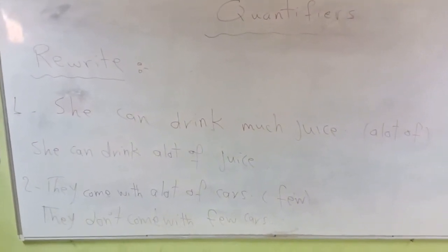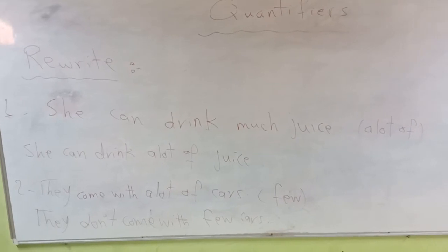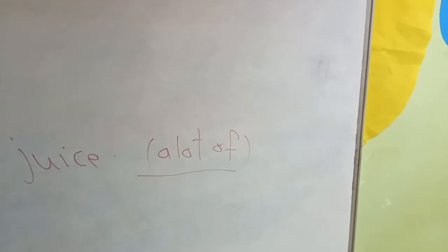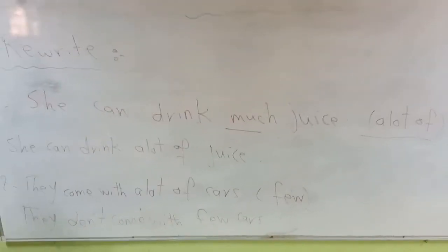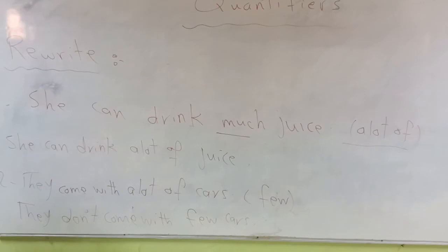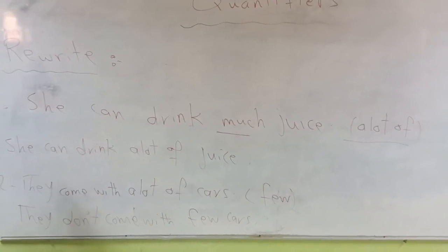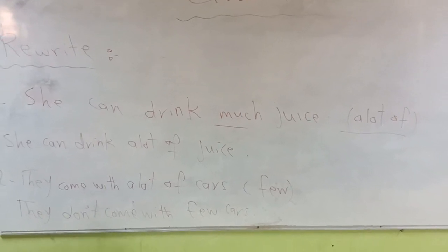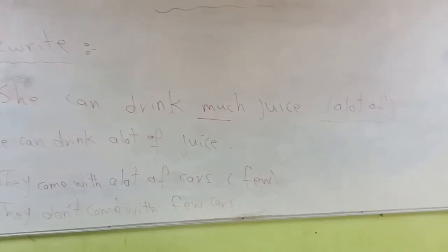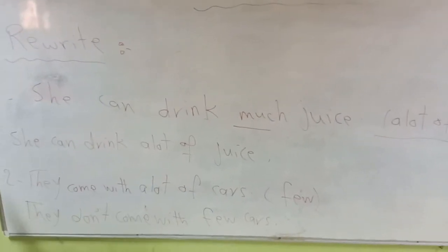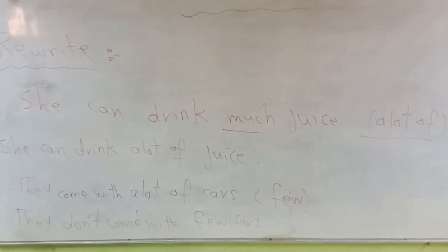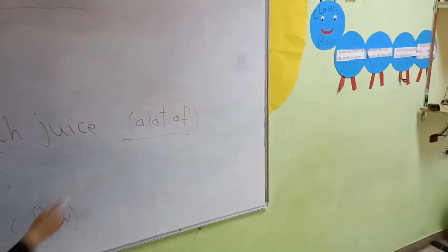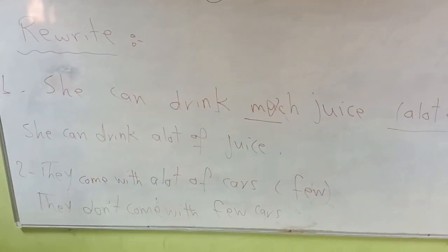One more example: she can drink much juice — use a lot of. The two quantifiers are much and a lot of. Are they the same or opposite? They are the same — much has the same meaning as a lot of. So I don't need to turn the sentence into negative or affirmative; I keep it as it is and just replace much with a lot of. The answer is: she can drink a lot of juice.